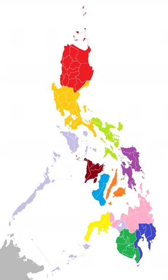The first presidential election was on September 15, 1935, after the ratification of the 1935 Constitution of the Philippines. Manuel Quezon of the Nacionalista Party emerged as the victor, defeating previous president Emilio Aguinaldo, who had been elected president by the Malolos Congress. As a commonwealth of the United States, the Constitution decreed that the president shall have one term of six years without re-election.